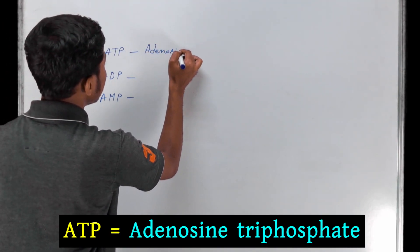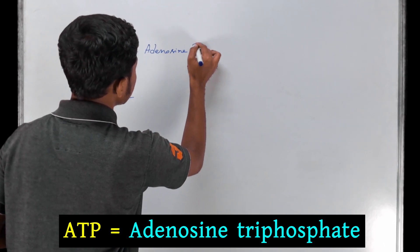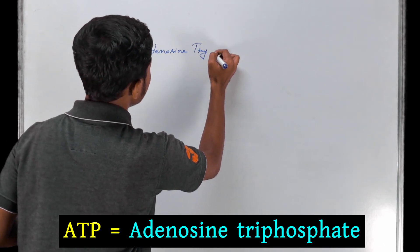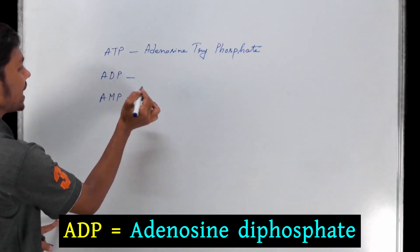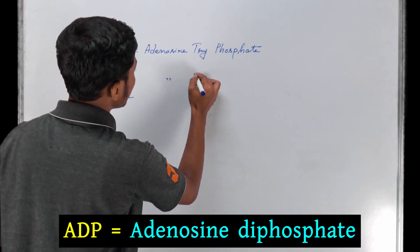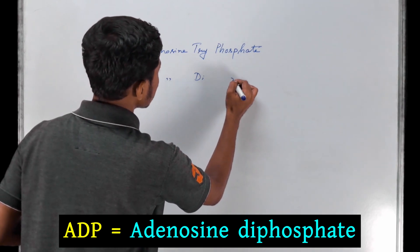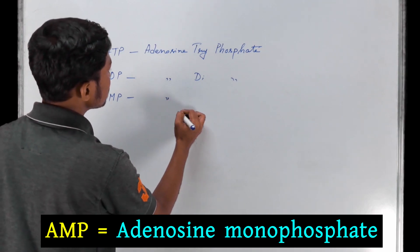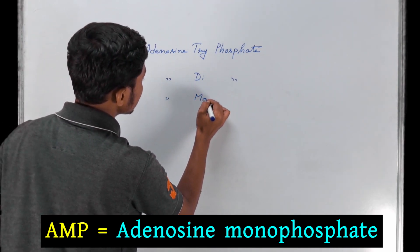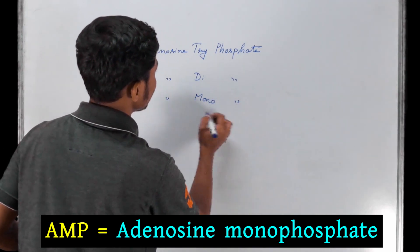Adenosine triphosphate - ATP is adenosine triphosphate. ADP - the full form is adenosine diphosphate. You got it? Adenosine diphosphate. And AMP - the full form is adenosine monophosphate.